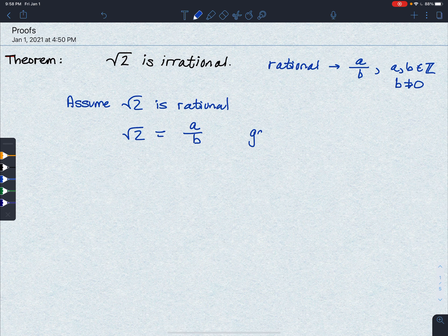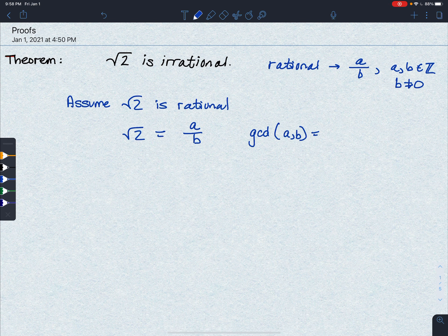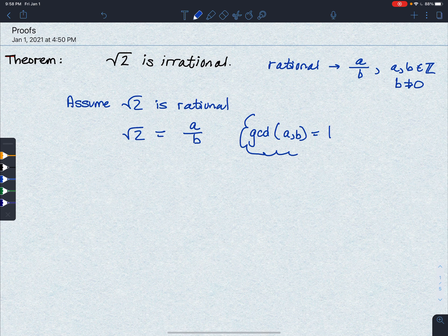So the way we write that, and we're going to discuss this later in the course, is that the greatest common divisor of a and b is 1. So that's a fancy way of saying that the greatest common factor between the two numbers is 1.